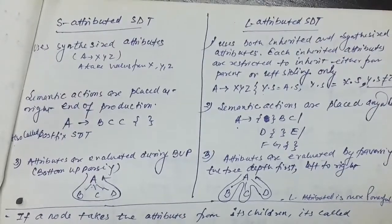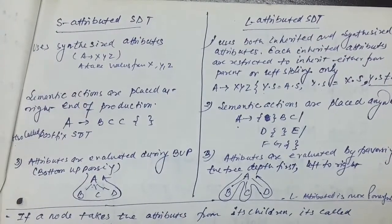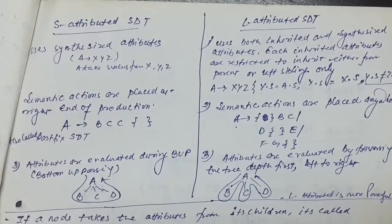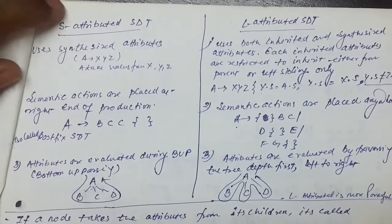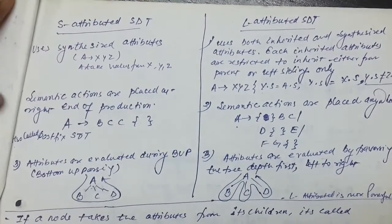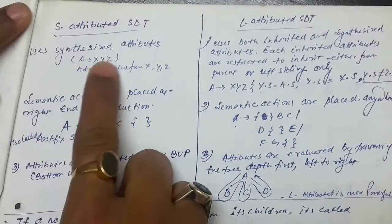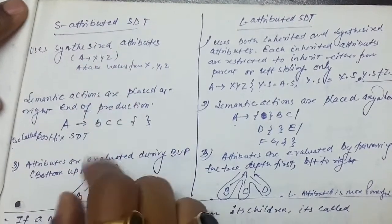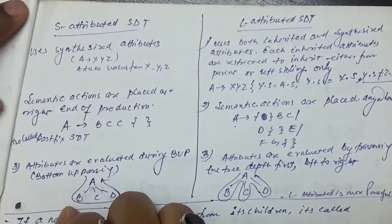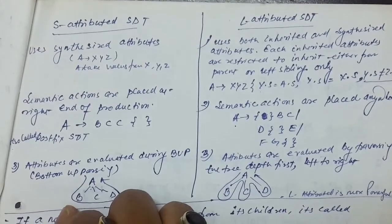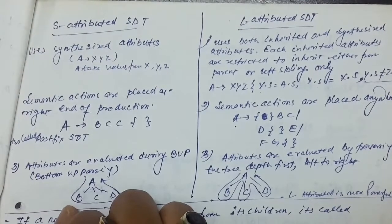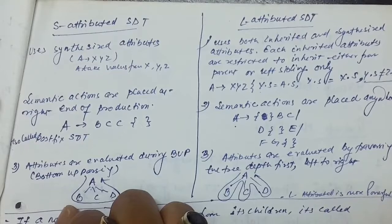We will discuss S-attributed and L-attributed SDTs. SDT means Syntax-Directed Translation. In the S-attributed SDT, also called the Synthesized SDT, it uses synthesized attributes. This means the parent takes the value from its children.